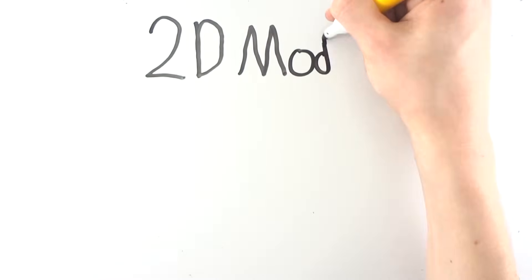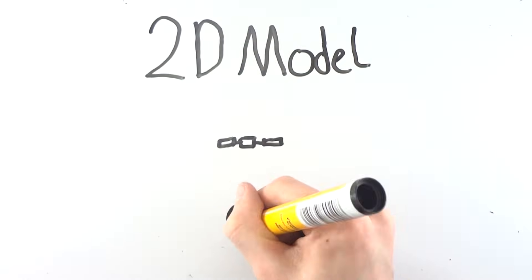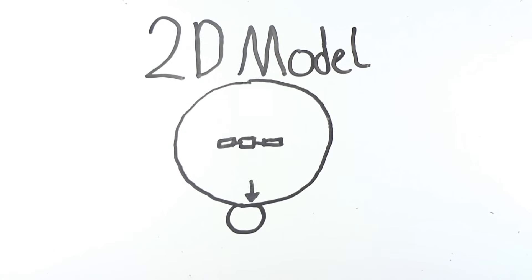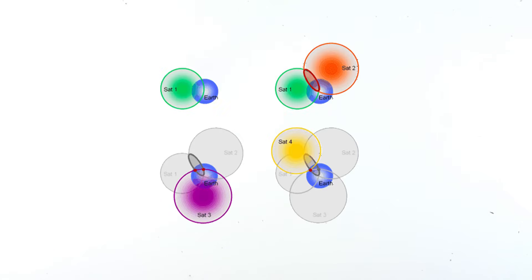As these satellites are also sending whereabouts they are, you can begin to draw spheres around the satellites, with you being somewhere on the outer border of that sphere. As we introduce more GPS satellites into the mix, we begin to get closer to where we are.